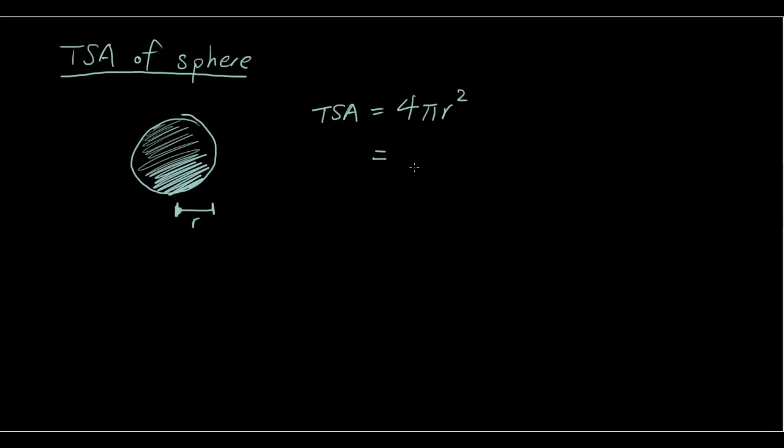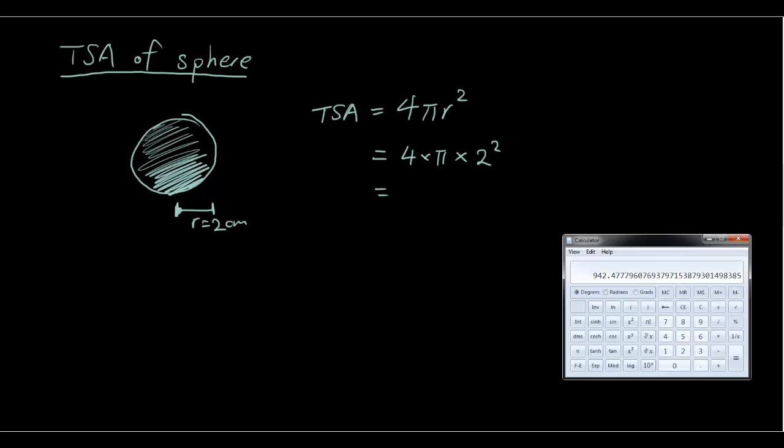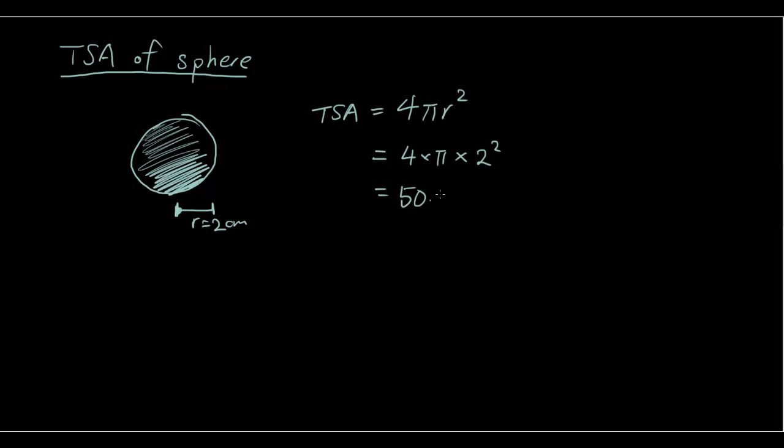So the total area is 4 times π times 2 squared. Let's say 2 centimeters. So we've got 2 squared, 4π times 2 squared. Four times π times two times two, and the answer is 50.3 centimeters squared.